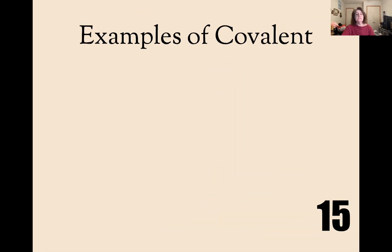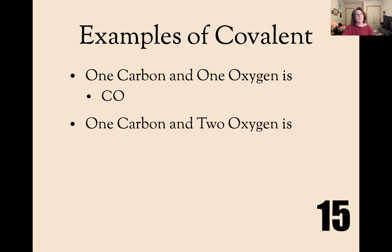Finally, let's look at examples of covalence. If I asked you to combine one carbon and one oxygen, you would write CO, capital C, capital O. However, one carbon and two oxygen is written CO2. One phosphorus and three chlorine would be PCl3. Thanks for watching.